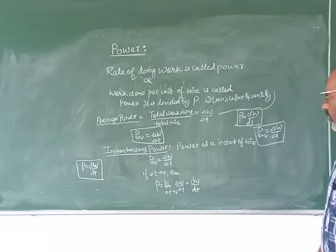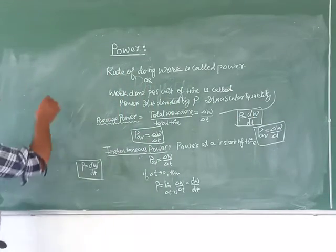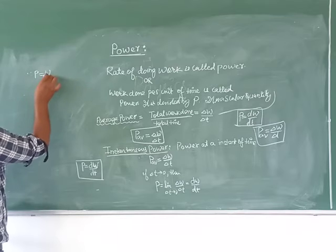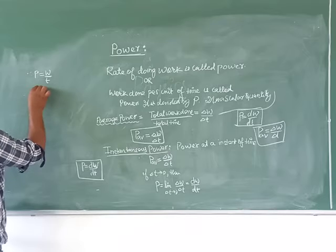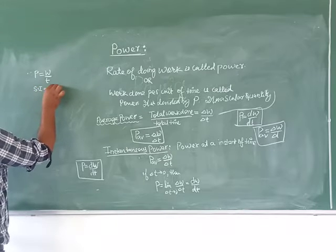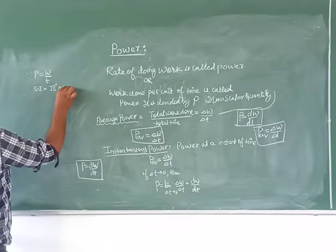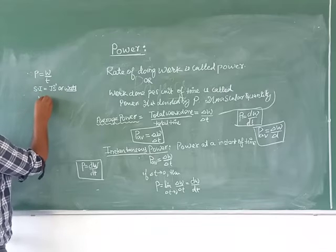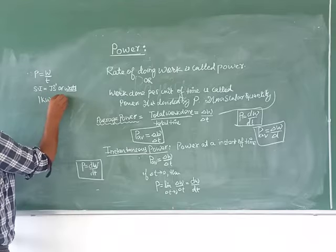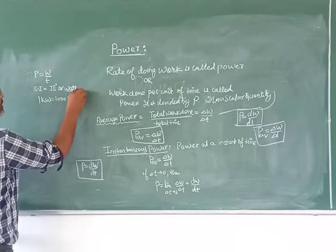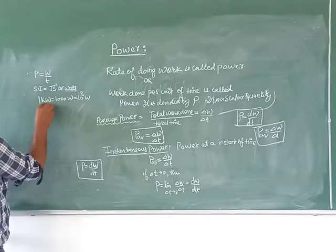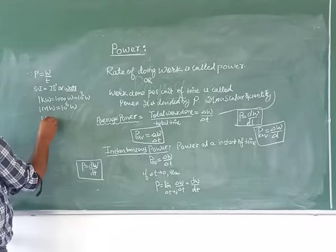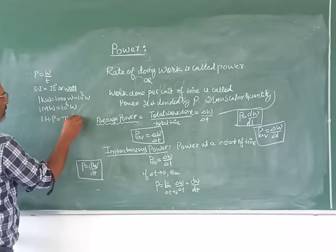The SI unit of power is Joule per second, or Watt. Larger units: 1 kilowatt equals 1000 Watt, that is 10 to the power 3 Watt. 1 Megawatt equals 10 to the power 6 Watt. 1 horsepower equals 746 Watt.